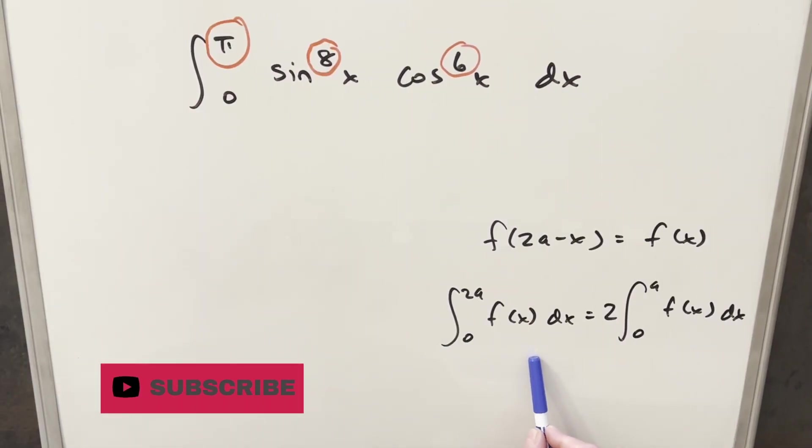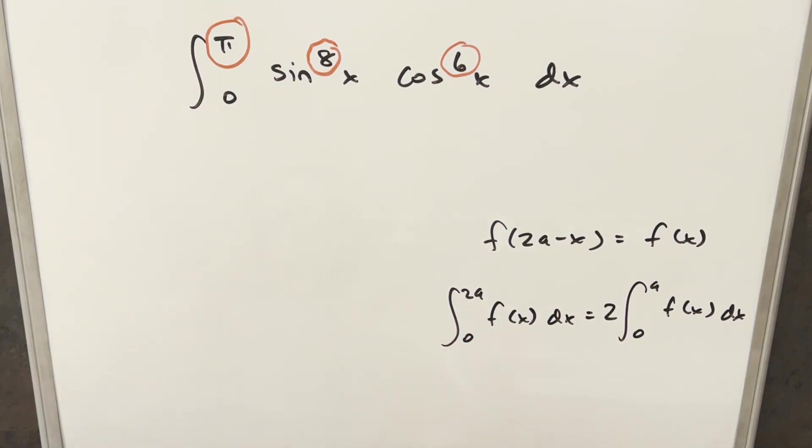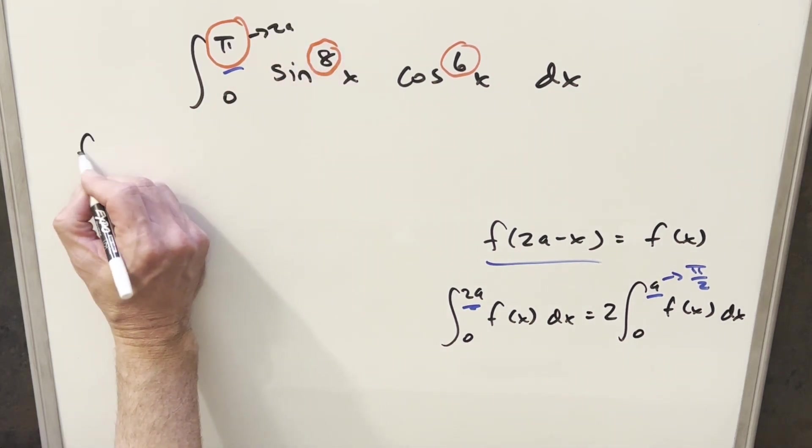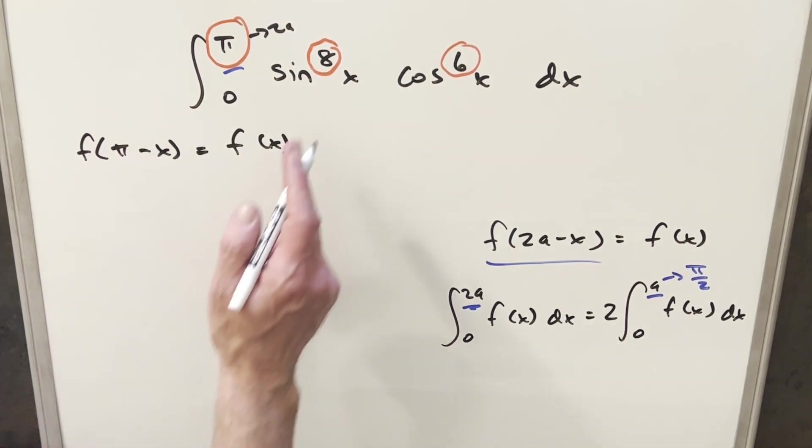So we have this property of the definite integral over here to the right where the 2a value on our integral is just going to be pi. What this allows us to do is split the upper bound in half. So this would become pi over 2. We just need to bring a 2 out front. But we have this condition we need to satisfy that f of 2a minus x is going to be equal to f of x. So for our problem specifically, we want to show that f of pi minus x is the same thing as f of x.